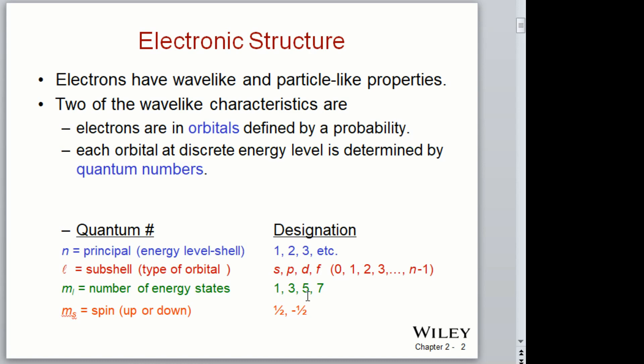m sub-s becomes important when you have a magnetic field applied to the subshell. Each energy state has two electrons designated spin up and spin down — so there are two electrons per energy state. That is something to remember when we start filling up the energy shells. Question: how many electrons are there in a filled p orbital?